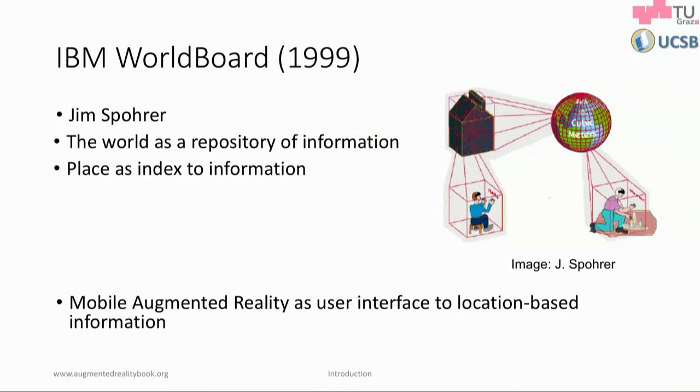Around the same time, Jim Spohrer had the vision of WorldBoard — the idea of the world divided into one-cubic-meter volumes, at least the surface of it. A company — Apple, where Jim worked at the time, and later he wrote the paper up at IBM — would be the maintainer of an inventory system of these one-meter cubes around the world. Objects would be tracked and one person could leave notes for others. It never got implemented, but it was a thought experiment that fit very much with the research I was involved with at Columbia.